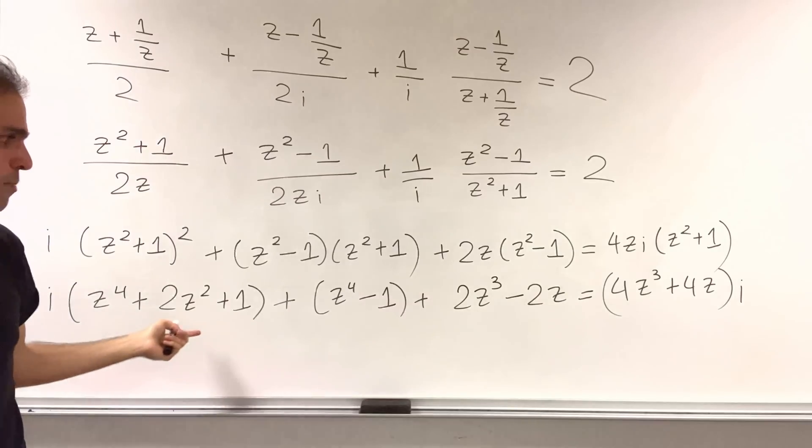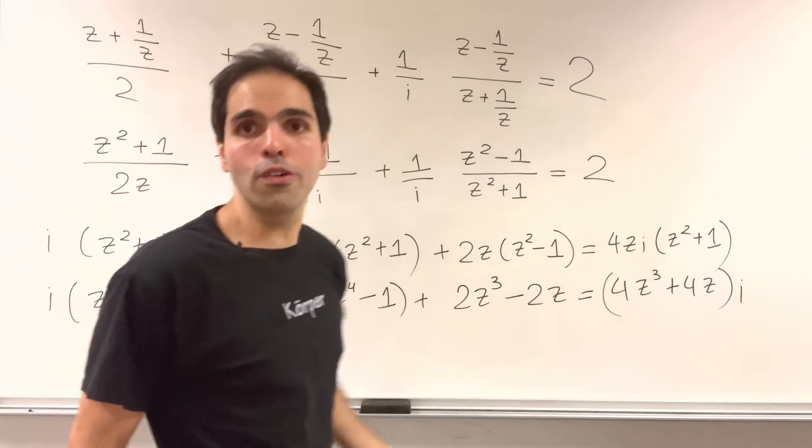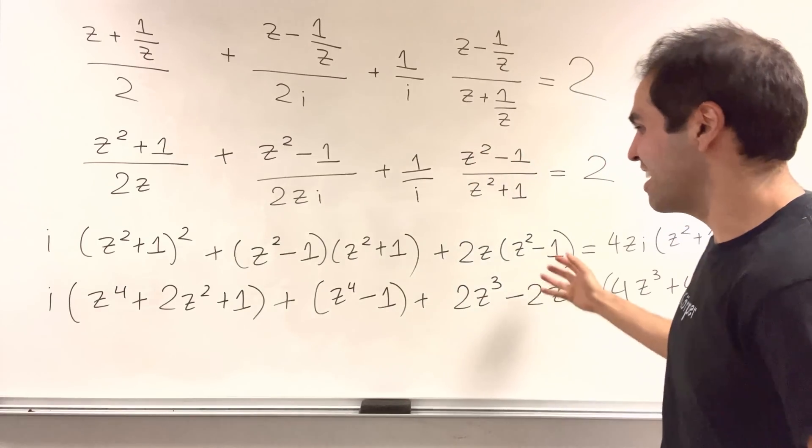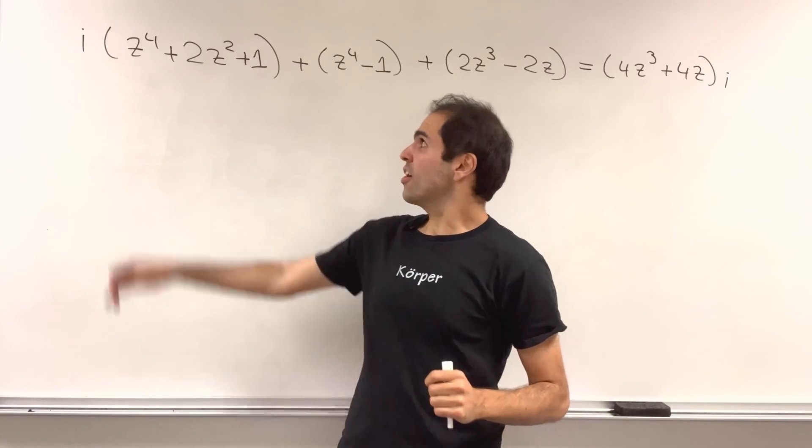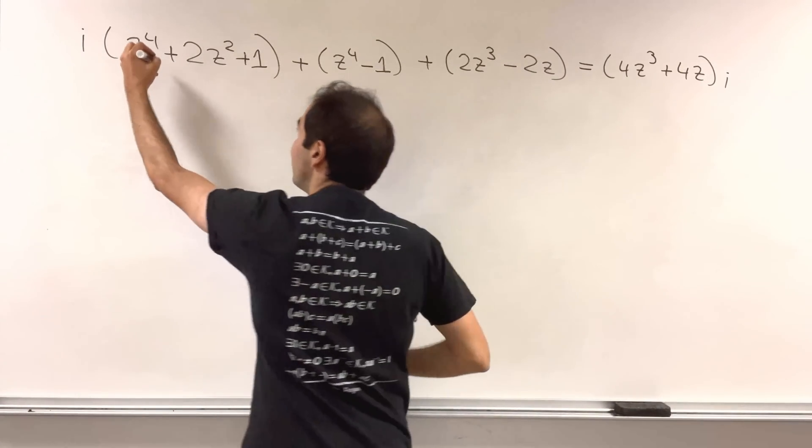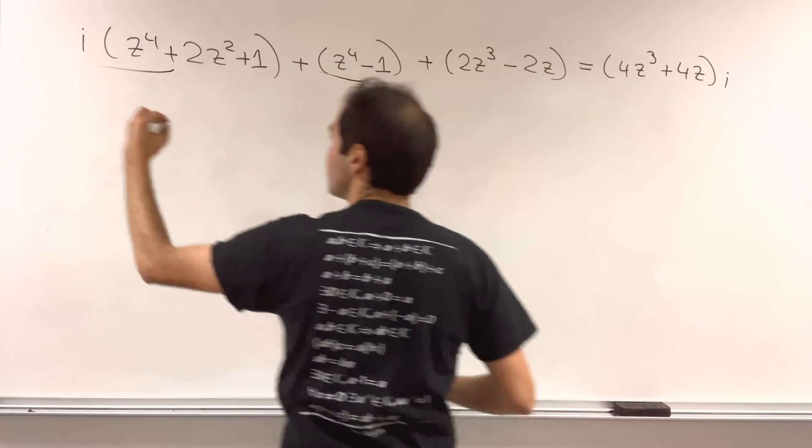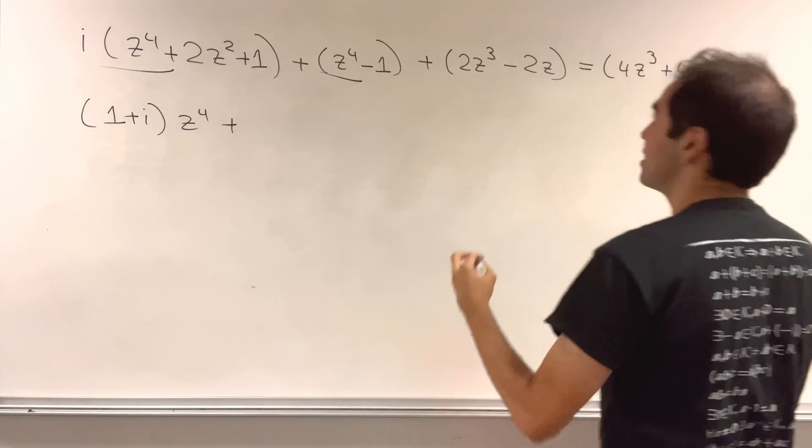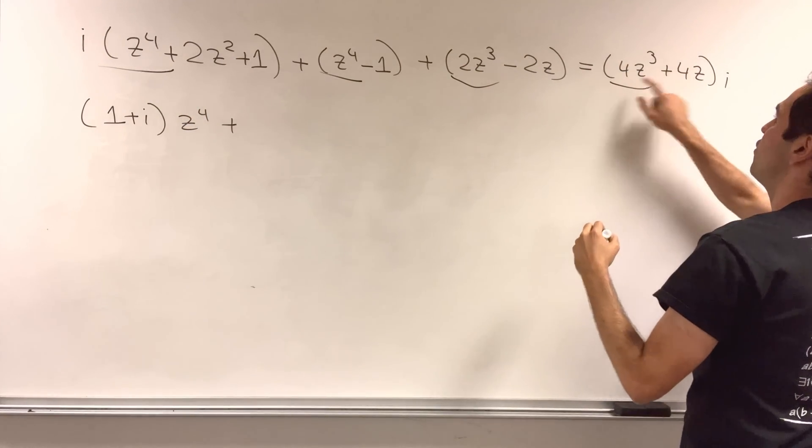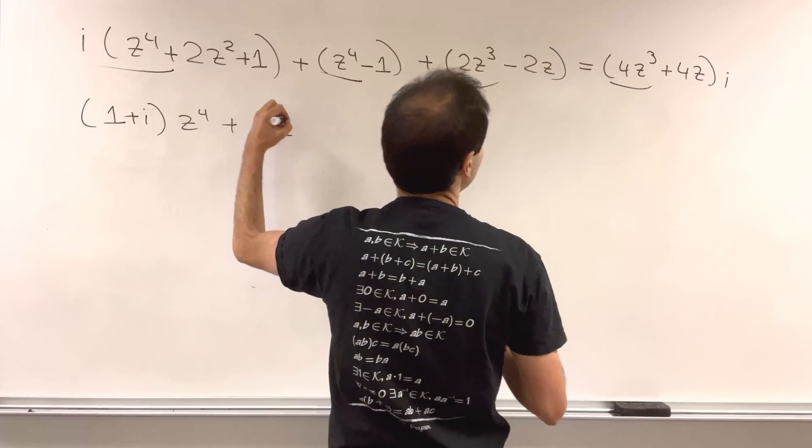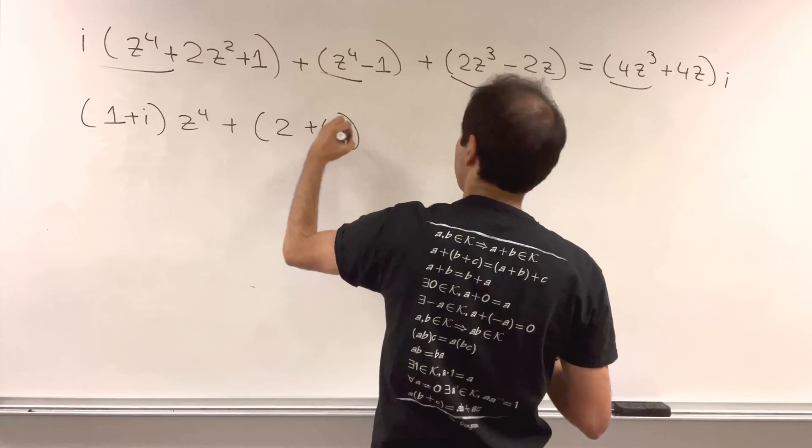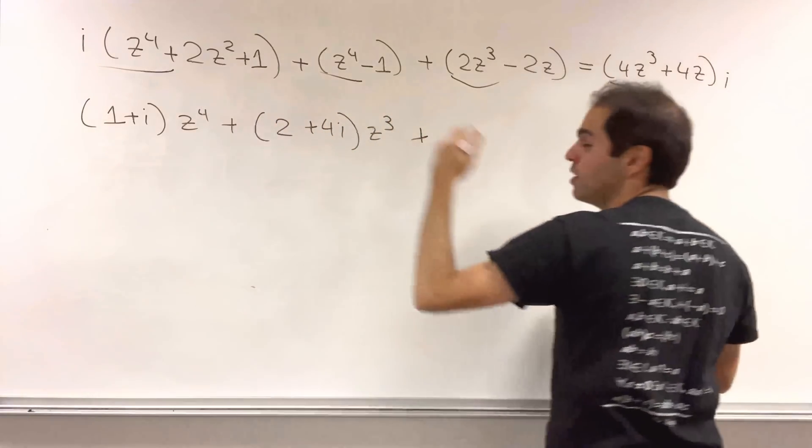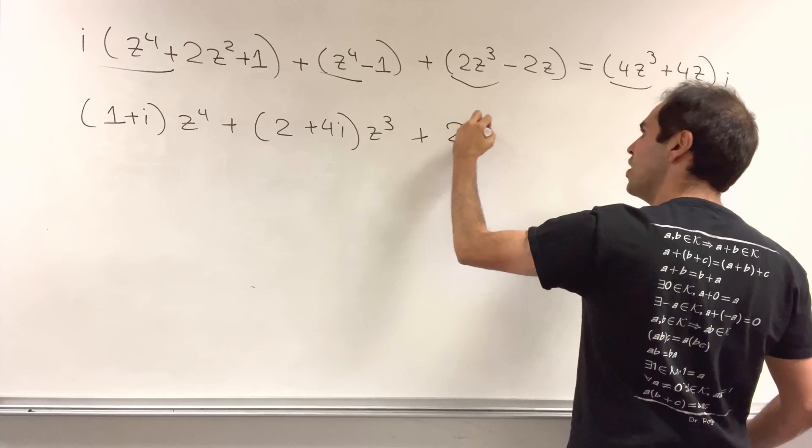And now, the next step is simply to gather all the powers together. Let's gather all powers together, just to write this as a polynomial. So let's start. First of all, the powers of z to the fourth. So there's an i here, and there's a one here. So one plus i, z to the fourth. Now let's look at z cubed. So there's two z cubed, and then four z cubed. So two plus four i z cubed. Now let's look at the square terms. So there's just this lonely one. So two i z squared.